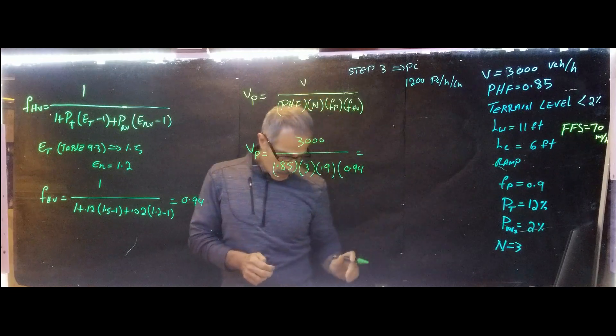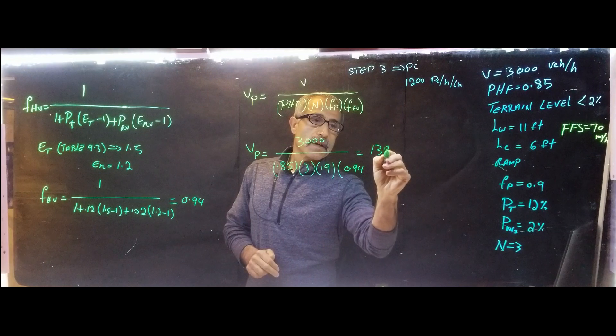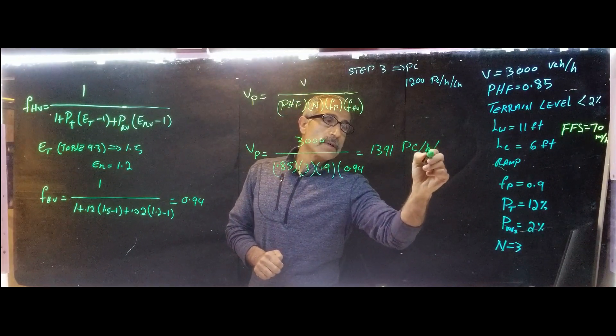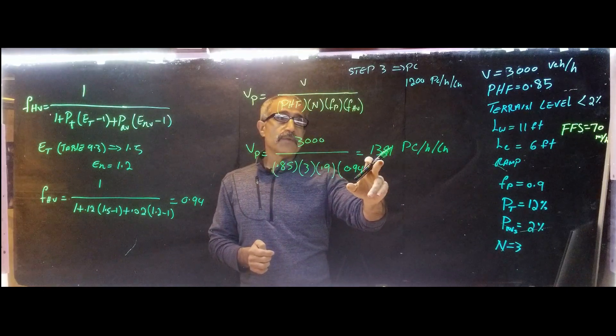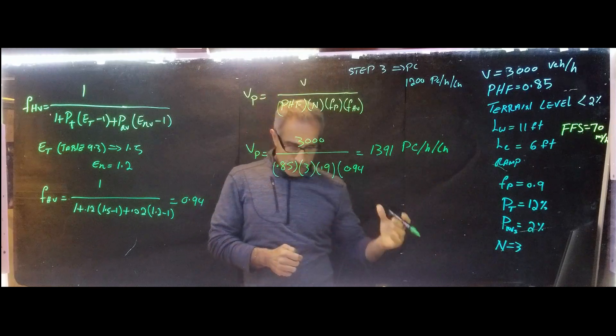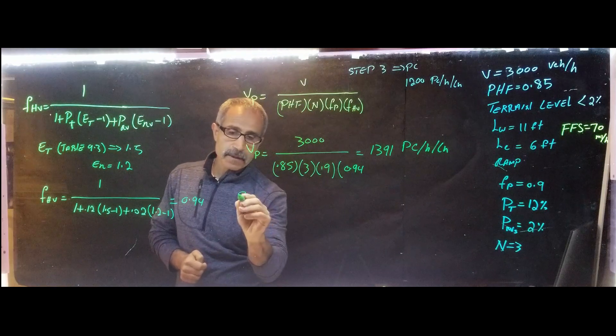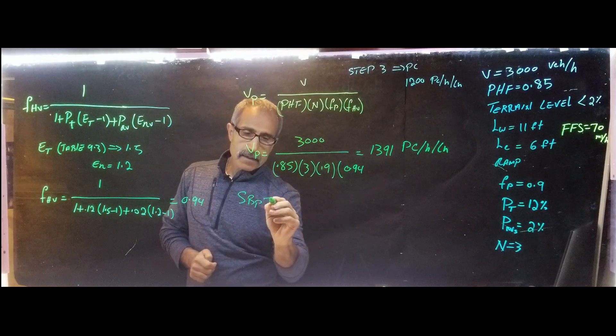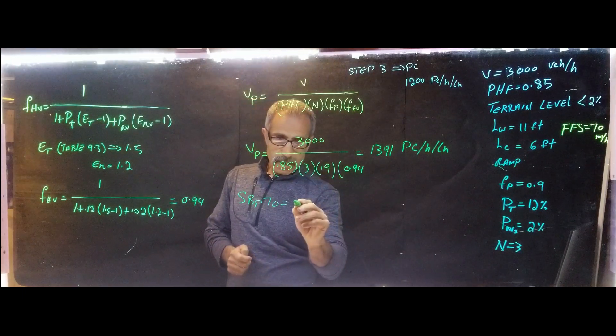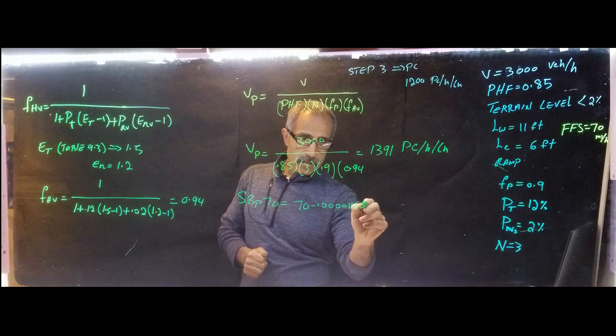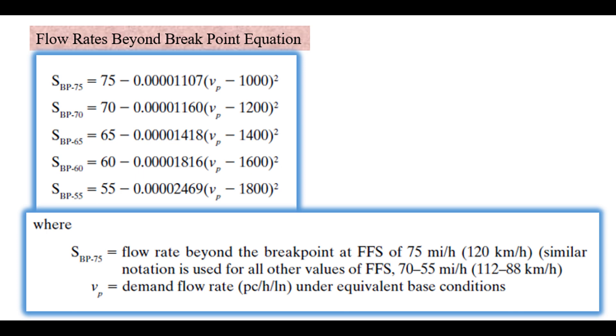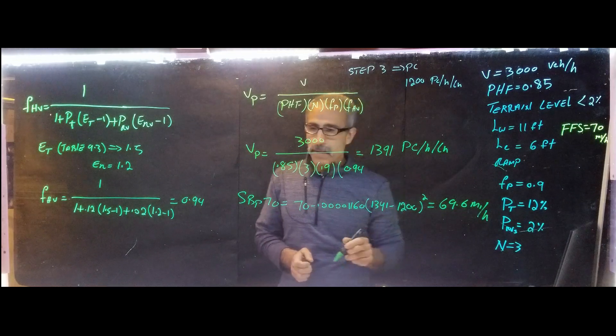1391. That's passenger car per hour per lane. So that was step four. We're going to move over to step five. Because we got this number is different than 1200 number, then we got to go to look at the formula table and look at the SPP 70. So in SPP 70, we're going to say, okay, SPP 70. And that comes out to the formulas on the table. 70 minus 0.001160 multiplied by VP was 1391 minus 1200 and square that. And I get 69.6 mile per hour. So that makes it easy.